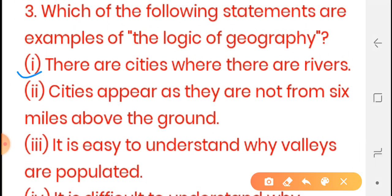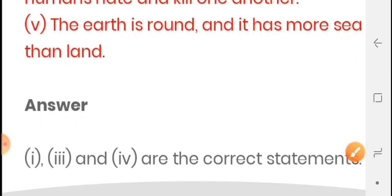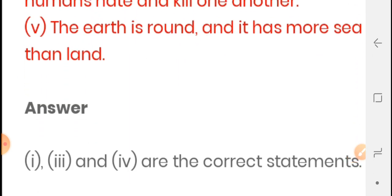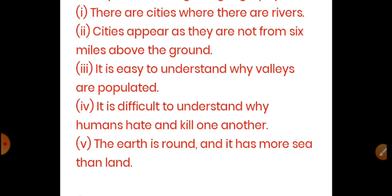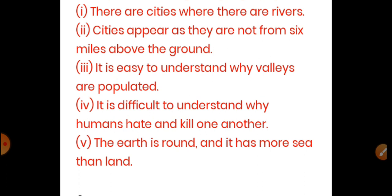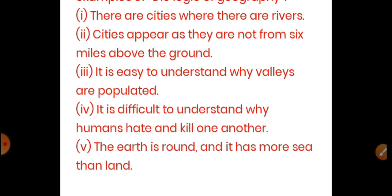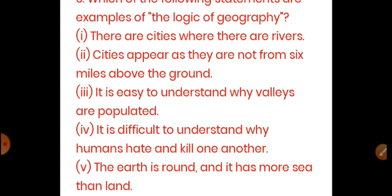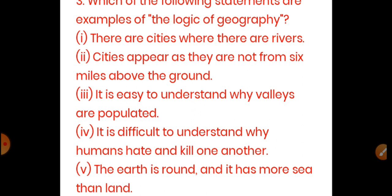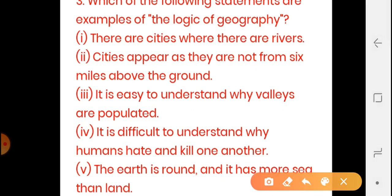Statement one: 'There are cities where there are rivers.' This tells us that cities exist where rivers are — we also read this in the poem that cities are situated near rivers. So statement one is correct. Statement two: 'Cities appear as they are not from six miles above the ground.' This means the city does not look the same from six miles up as it does from the ground — things look different at that height. This statement is not correct as an example of geographic logic.